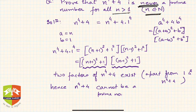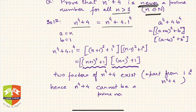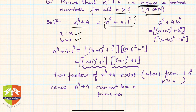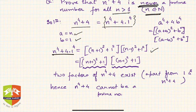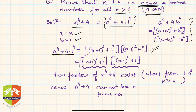So how to solve: n to the power 4 plus 4 can be written as n to the power 4 plus 4 times 1 to the power 4. Now using Sophie Germain Identity, let a equal n and b equal 1. So n to the power 4 plus 4 times 1 to the power 4 can be expressed as (n plus 1) whole square plus 1 squared, times (n minus 1) whole square plus 1 squared — just substituting n for a and 1 for b.